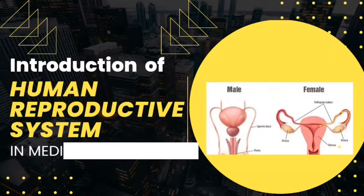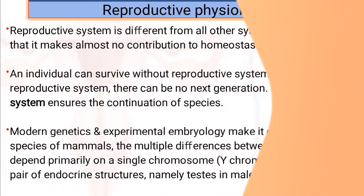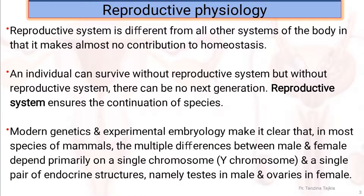Today's lecture is about introduction of the reproductive system. The reproductive system is different from all other systems of our body in that it makes almost no contribution to homeostasis. An individual can survive without a reproductive system, but without it there can be no next generation. The reproductive system ensures the continuation of species.